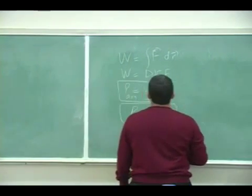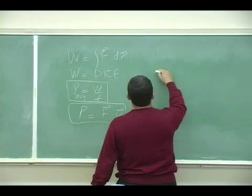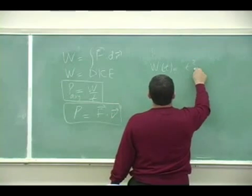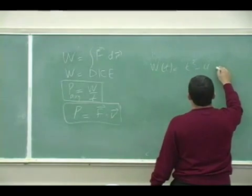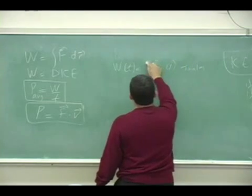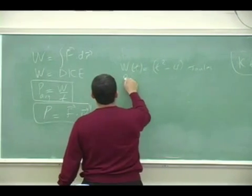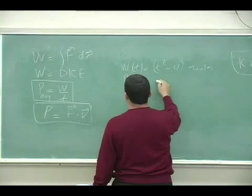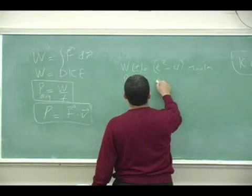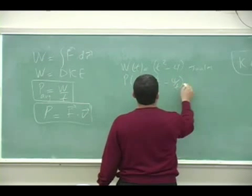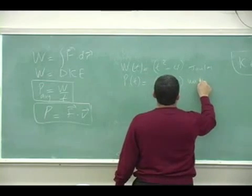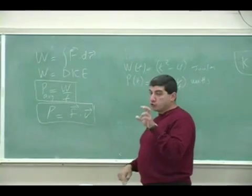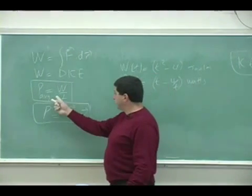You could also calculate the instantaneous power with this if you knew the instantaneous work. Let's say the work was changing as a function of time. You could calculate instantaneous power by doing the instantaneous work function divided by the t. However, let's say somebody told you the instantaneous work function as a function of t was t squared minus four joules, then you can get power instantaneous by just simply dividing that by t.